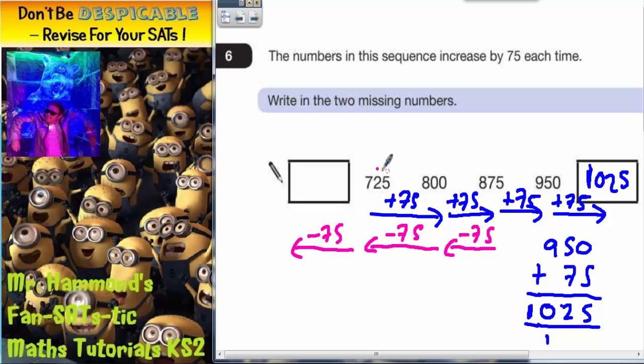75 from 725 to get the box at the start. So that's going to be a column method again. But this time it's a subtract.